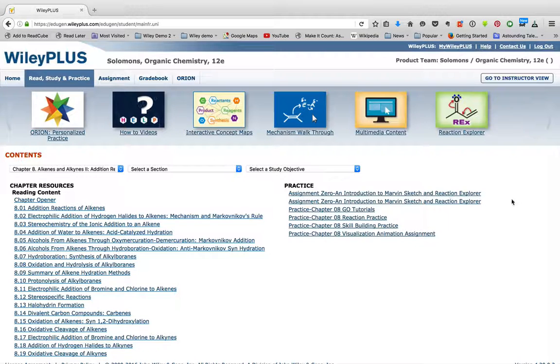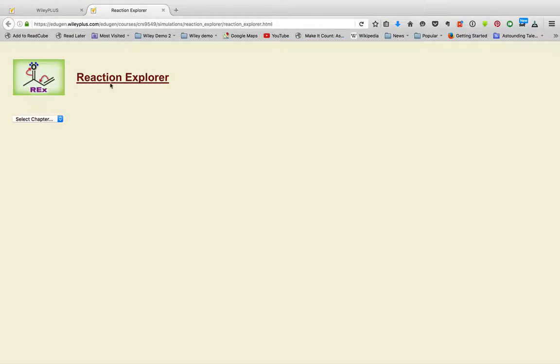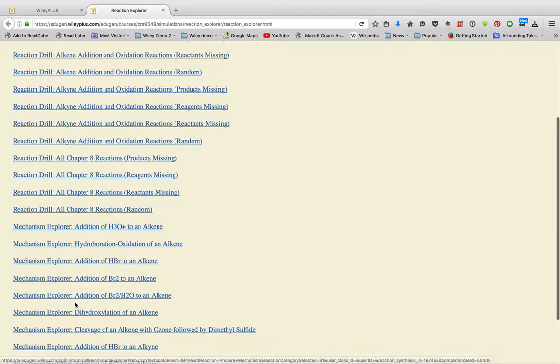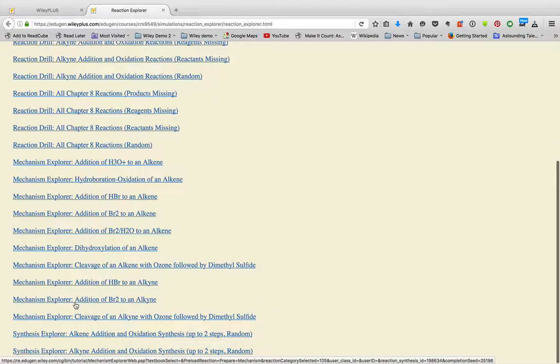That's all those banner items, but everything there, including Reaction Explorer, are going to be embedded within the e-textbook. When you go to a chapter and look at Reaction Explorer, you have reaction drills, which are flashcards, mechanism practice, mechanism explorer, and synthesis explorer, which is synthesis practice. Remember, we have those how-to videos explaining how to use the mechanism and the synthesis explorer.